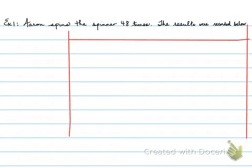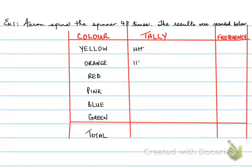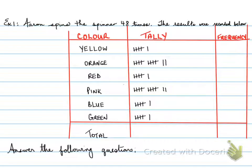Let's look at an example. Aaron spins the spinner 48 times. The results were recorded below. Here's a table. We recorded the color and the number of times that color occurred in a tally. Every time that color occurred, a tally was taken: yellow, orange, red, pink, blue, and green. The tally was recorded as follows.